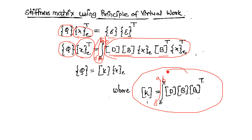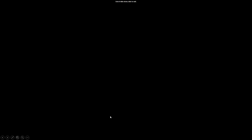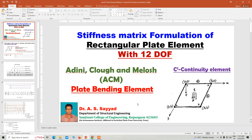This double integration can be solved using mathematical approaches to find the exact stiffness matrix of order 12×12. This is the standard derivation of the 12 DOF plate bending element, also called the ACM plate bending element or C1 continuity element. In the next class, we will solve the stiffness matrix of the 16 DOF plate bending element, which is the BFS plate bending element. Thank you very much.